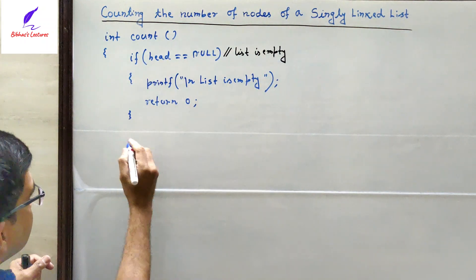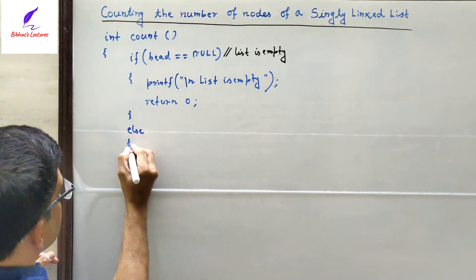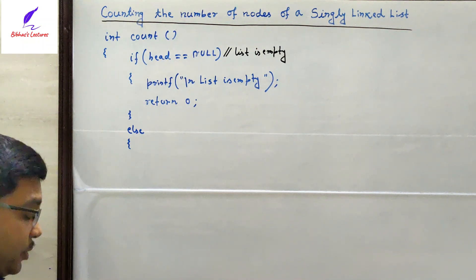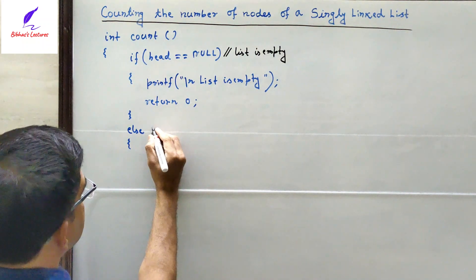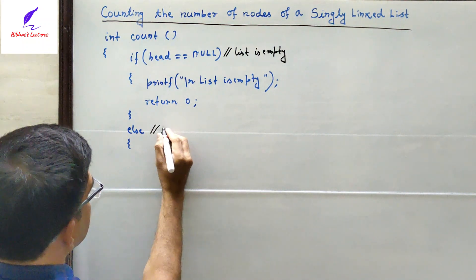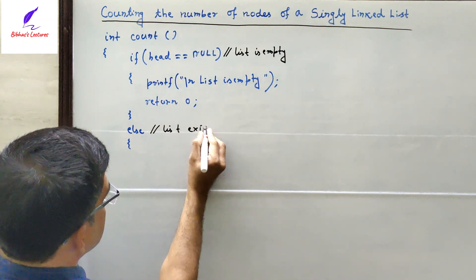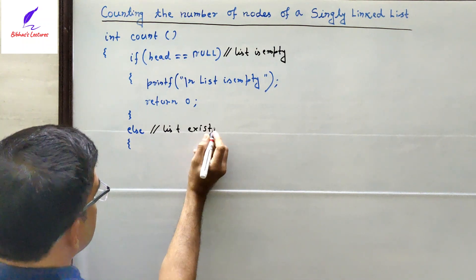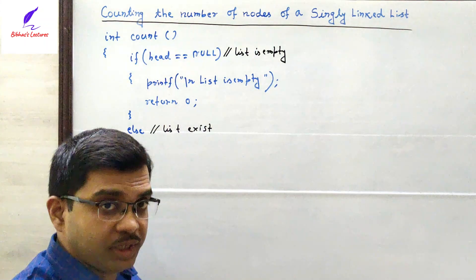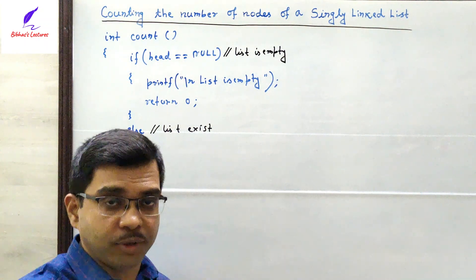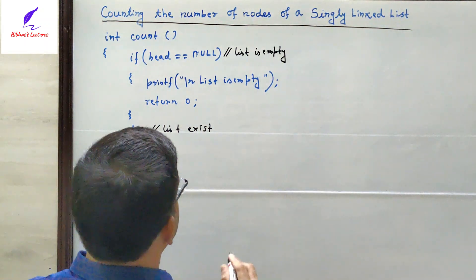And it will have its counterpart, that is the else block. The else block means the list exists; it will be executed when the list exists. So first we will draw the figure, then we will count the number of nodes.